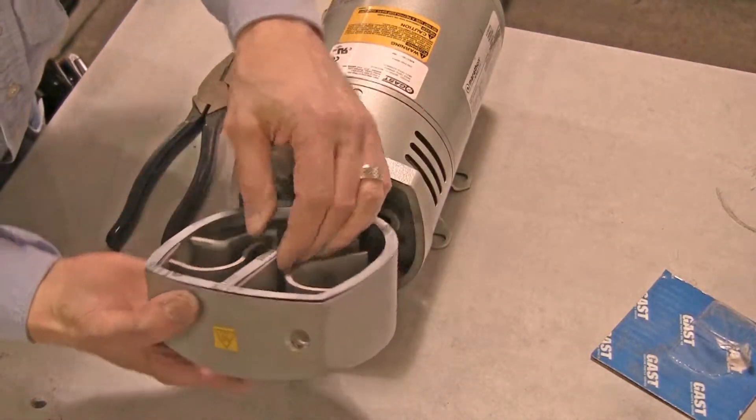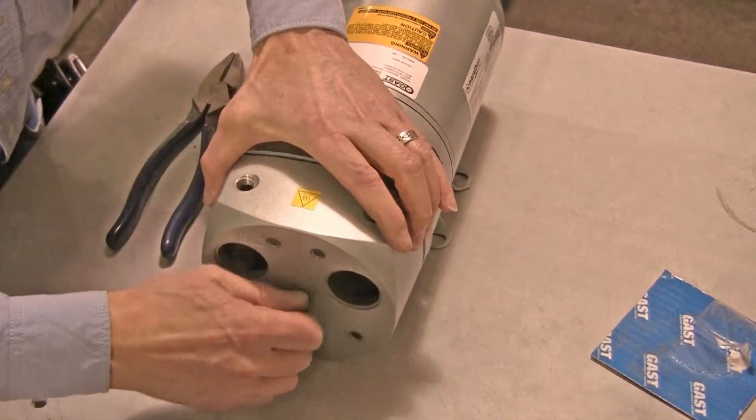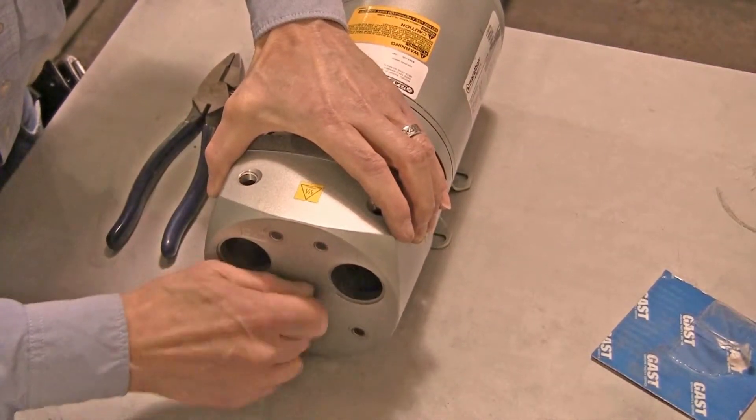Install the gasket and replace the muffler box. Hand tighten the muffler box bolts, making sure the gasket is lined up with the edge of the muffler box.